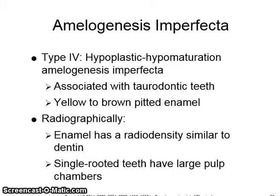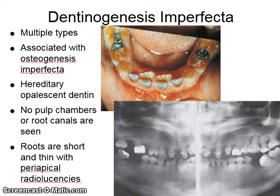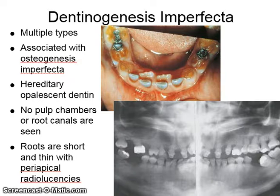Single-rooted teeth have large pulp chambers. Dentinogenesis imperfecta has multiple types and is associated with osteogenesis imperfecta. In hereditary opalescent dentin, no pulp chambers or root canals are seen. Roots are short and thin with periapical radiolucencies.